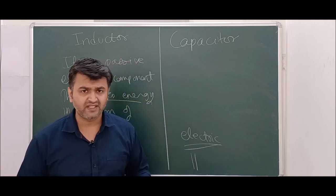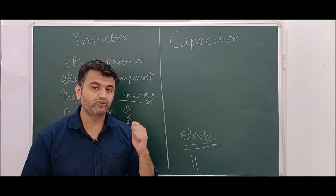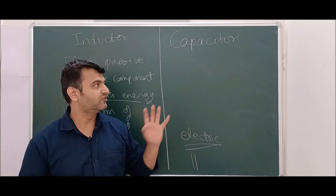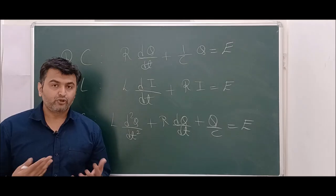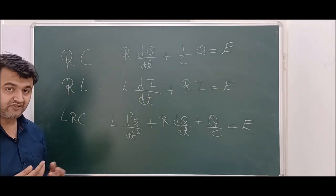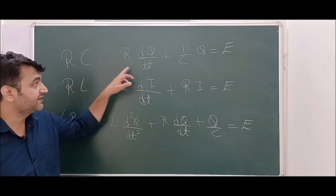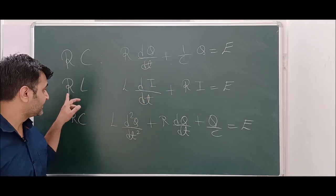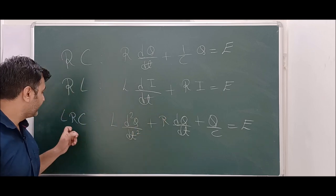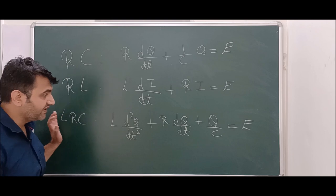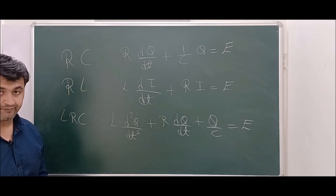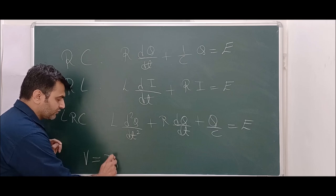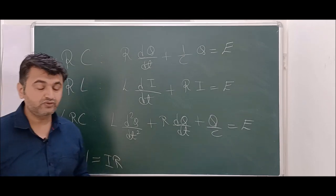In problems, I will give you hints to take you to the point where you can solve on your own. Before going to examples, there are three equations we'll be using. When resistor and capacitor are given, we use the RC circuit equation. When resistor and inductance are given, we use the RL circuit equation. When inductance, resistance, and capacitance are all given, we use the second-order differential equation. Also remember V = IR (Ohm's law). Pause the video and write down these equations.